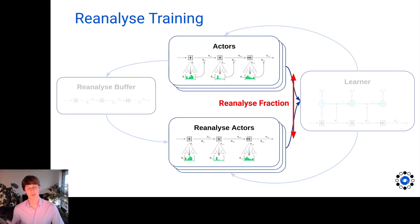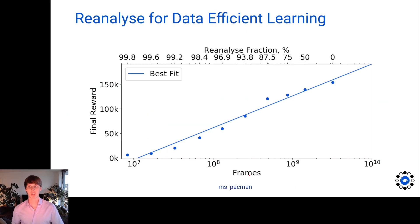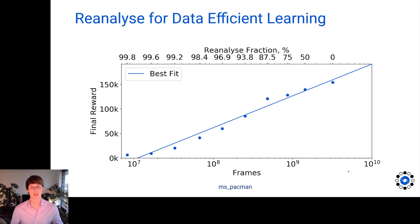If we have a reanalyze fraction of 0%, we only have environment interaction — the normal online RL use case. If the reanalyze fraction reaches 100%, we have no environment interaction at all — a fully offline RL use case. Because we can smoothly vary this reanalyze fraction, we can learn efficiently at any kind of data budget. You can see in the game of Ms. Pac-Man how performance varies as we change the amount of environment interactions by several orders of magnitude, following a similar log-linear plot as observed in some large language models.